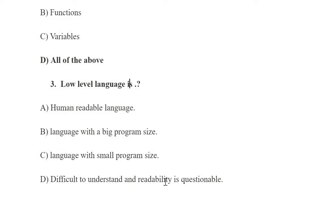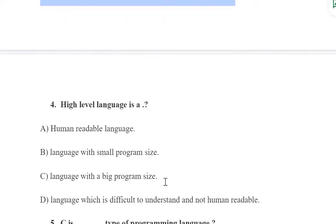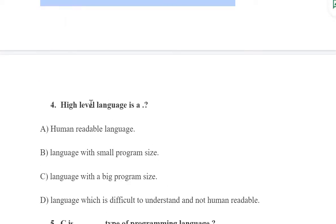Next is: High level language is what? High level languages are closer to human beings. We can see the same options: human readable language, language with small program size, language with big program size, language which is difficult to understand and not human readable. Human readable language is the correct answer, option A.